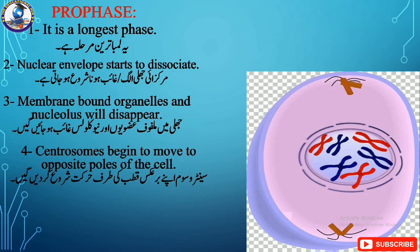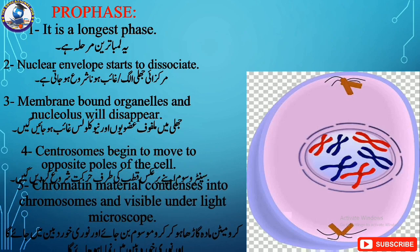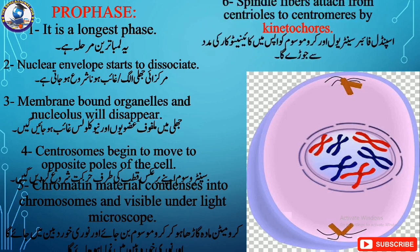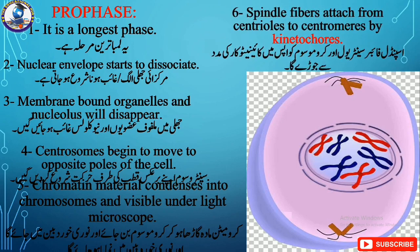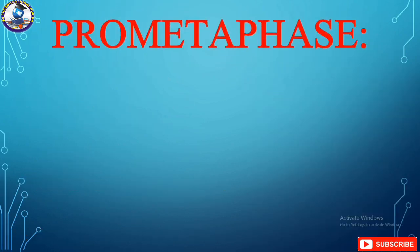Chromatin material condenses — that is, chromosomes become condensed and visible under a light microscope. The last thing done in prophase is that the spindle fibers attach from centrioles to the centromere by kinetochores. Kinetochores are a type of protein.